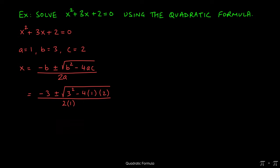Now we can clean up the arithmetic here. 3 squared will give us a 9. 4 times 1 is 4, times 2 is 8, so we get minus 8 here. This should be pretty easy to recognize. This will just give us negative 3 plus or minus. 9 minus 8 is going to give us 1, and we still have the square root all over 2. Now hopefully you all remember that the square root of 1 is simply 1.